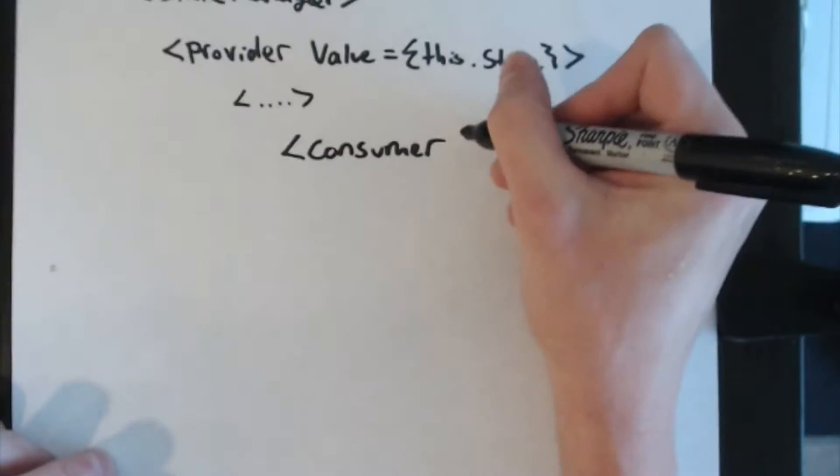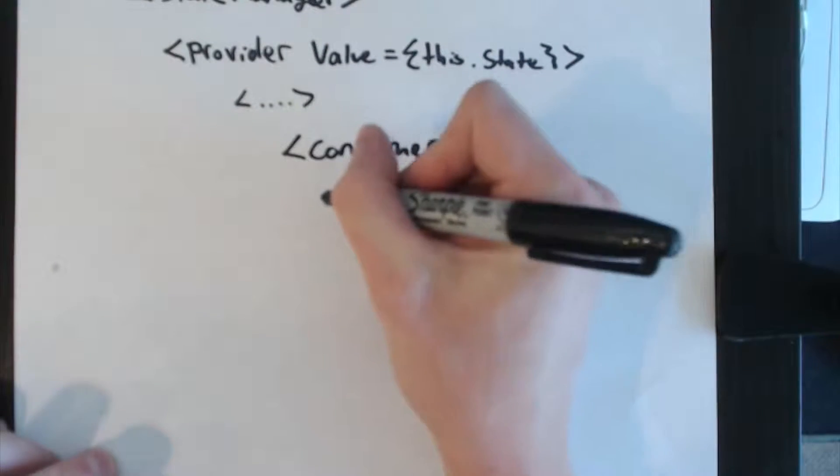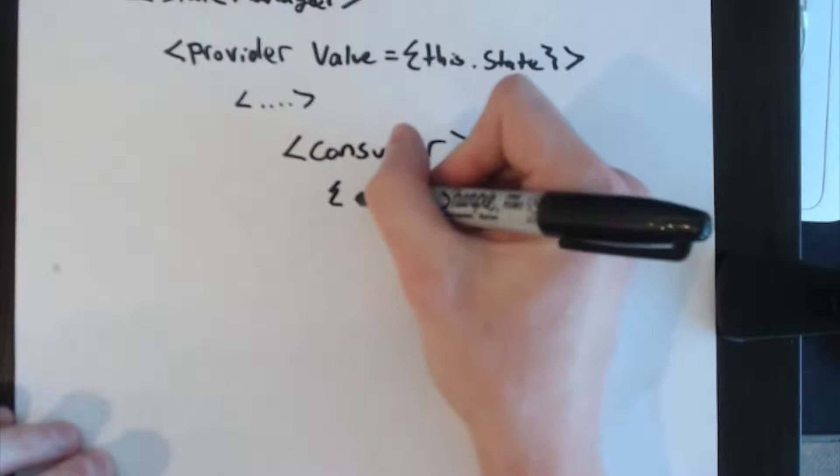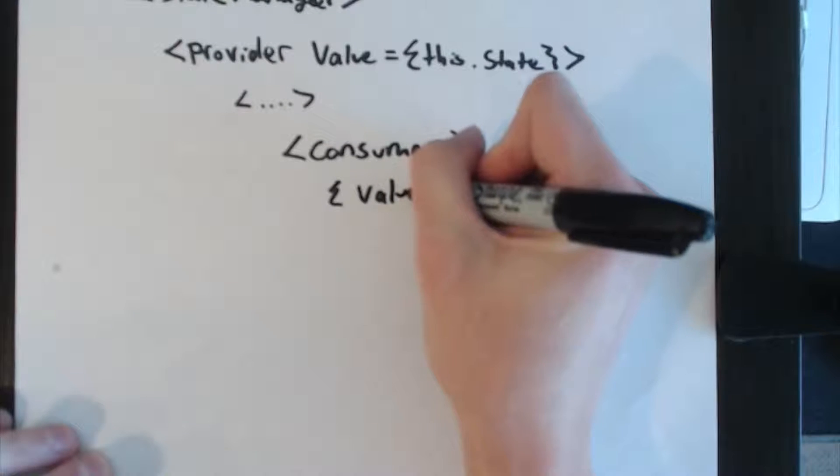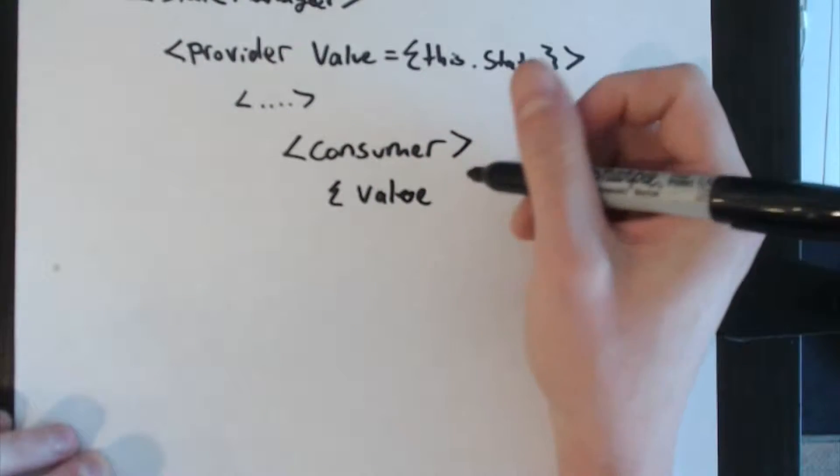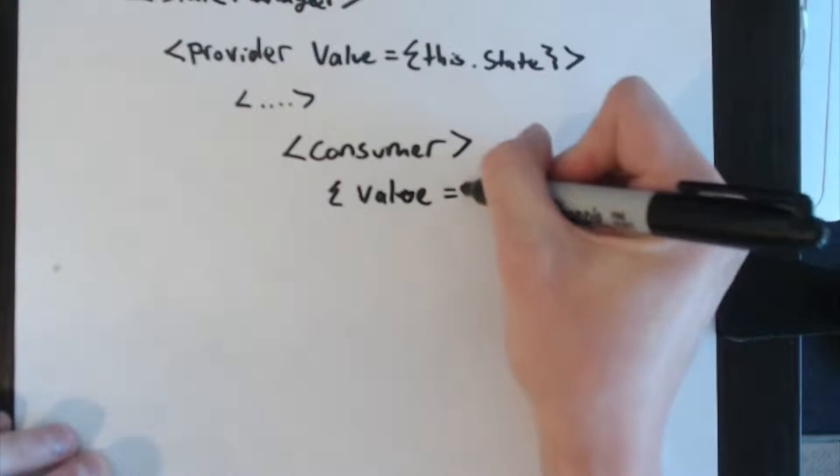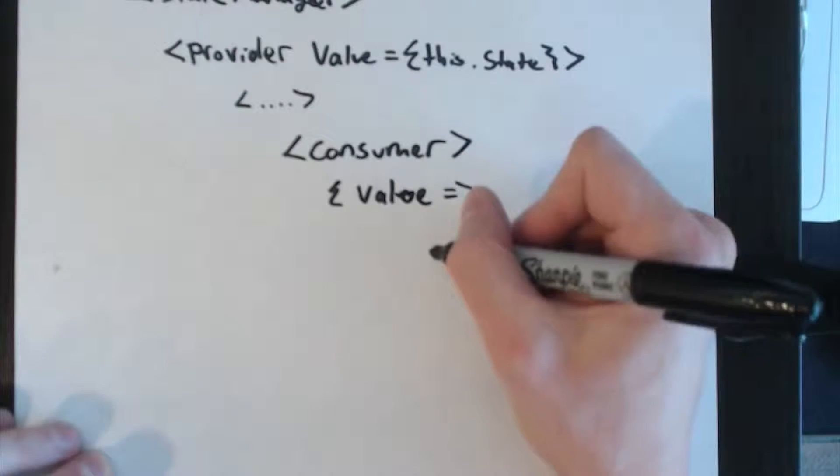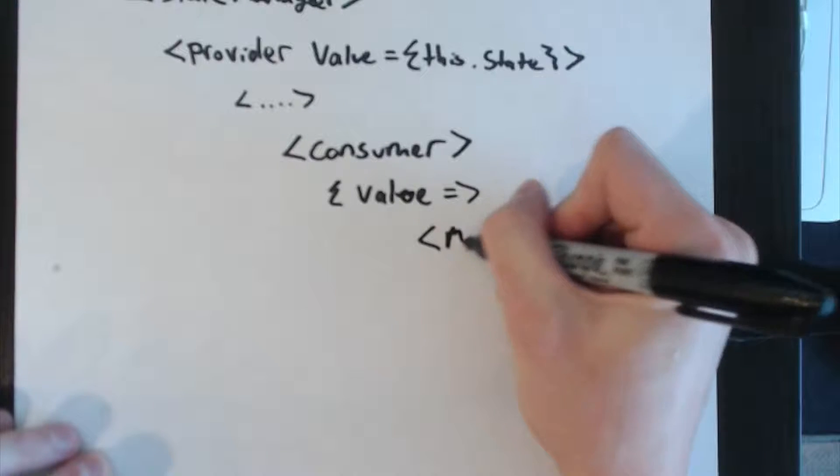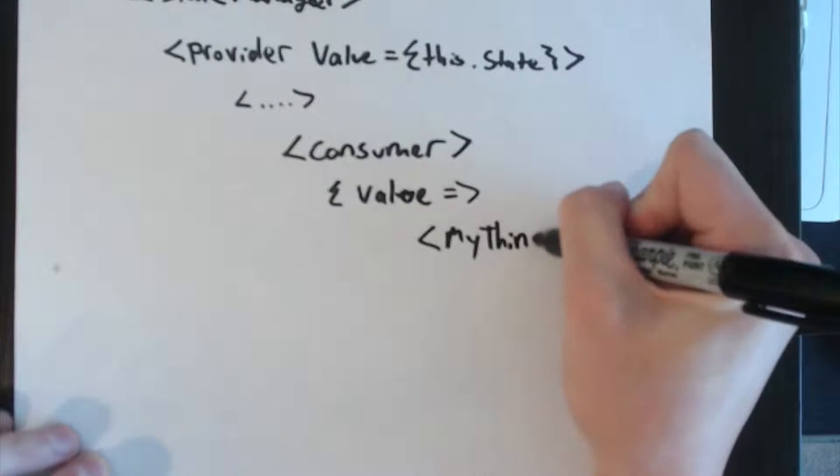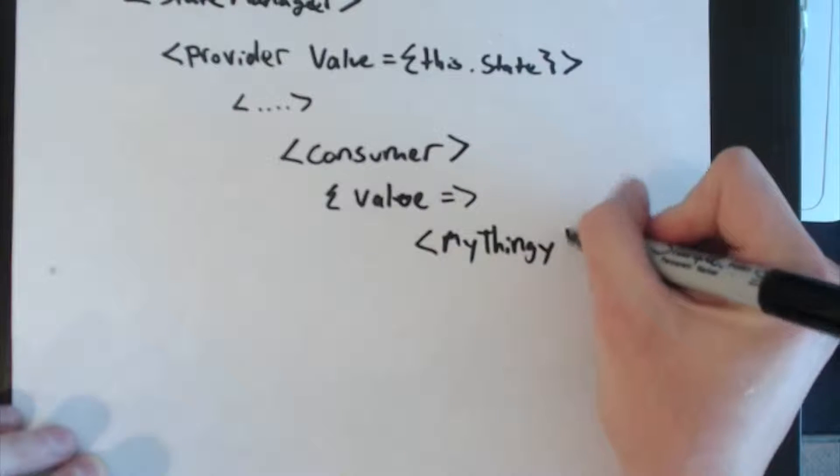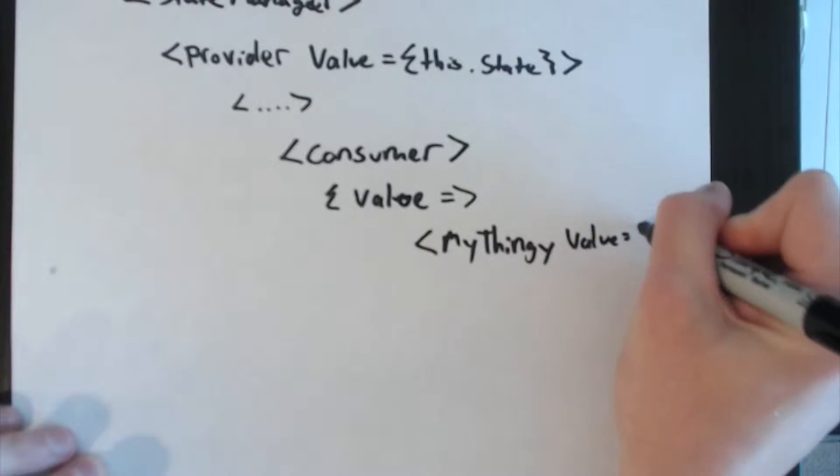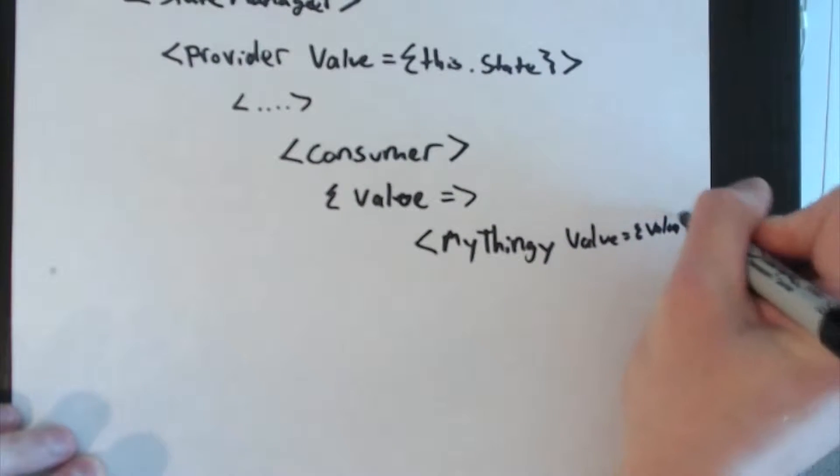Now the context consumer component is a function-as-a-child or render prop type API where you pass in a child that is a function. So it looks like this: you put a JSX curly brace and then an ES6 function that takes in the value as the argument, which is the context value provided further up the tree, and then you render something—we'll just say my thingy—so it's some component and it takes in the value.